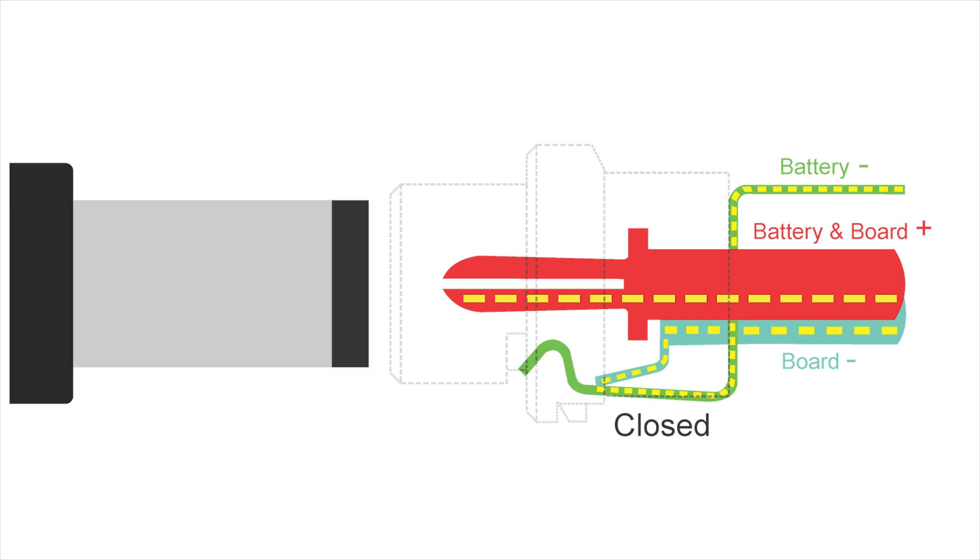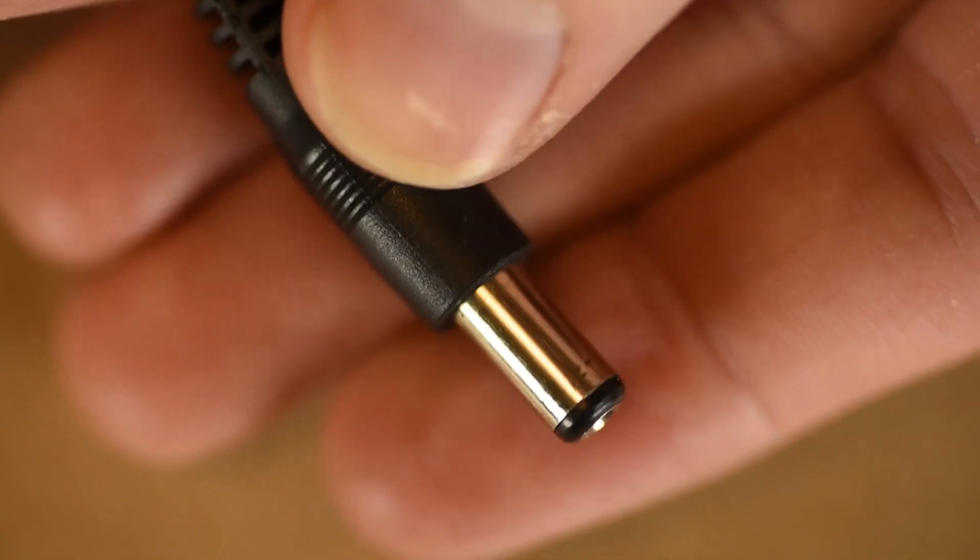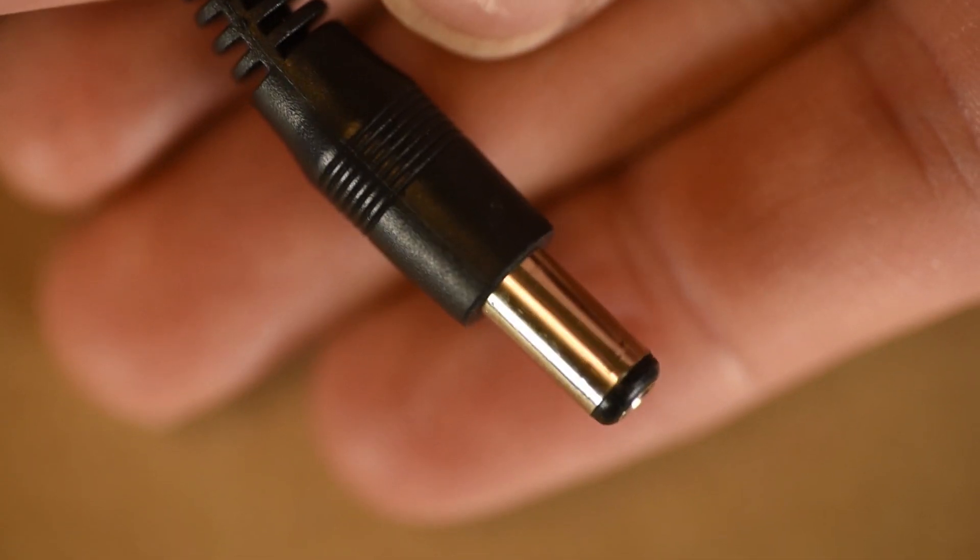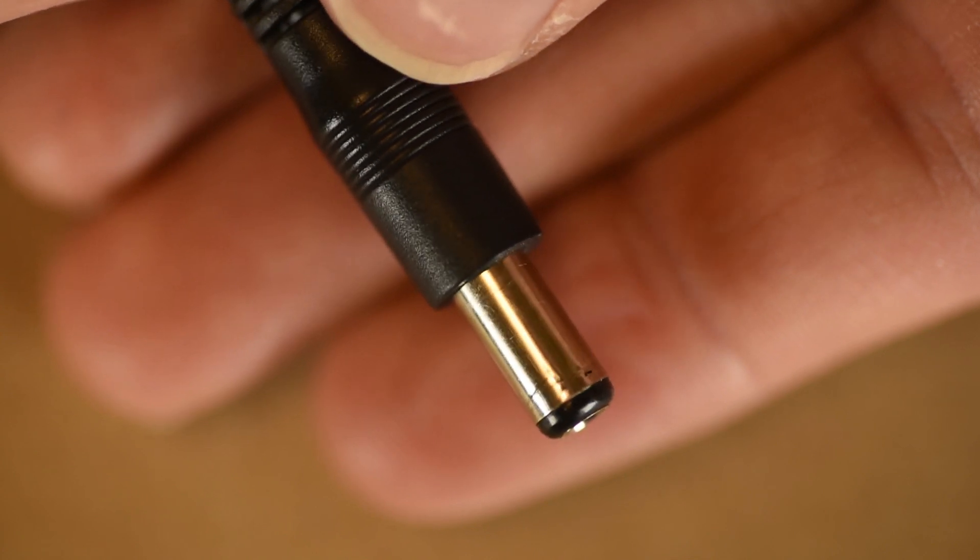Now let's take a closer look at the charger. On the exterior, the black portions are non-conductive. They don't transfer power. The silver portion of the barrel is the conductive negative terminal.